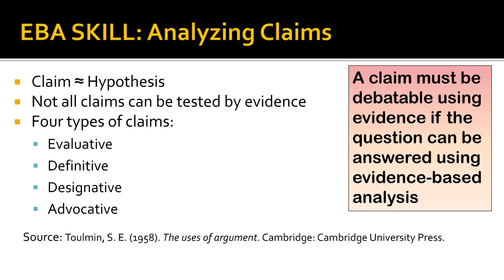EBA requires that we consider claims that can be stated in the form of a hypothesis. Specifically, we must be able to state the factors that are expected to influence the occurrence or degree of an outcome. However, not all claims meet this requirement. Therefore, a claim is almost synonymous with the hypothesis, but not quite. For a claim statement to be a hypothesis, it must be possible to test the claim by reviewing evidence.